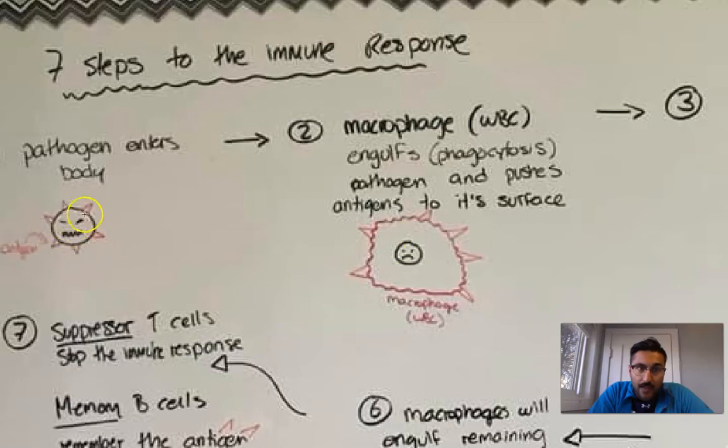The macrophage has swallowed up the pathogen, and it's taken those red triangles, those antigens, and expressed it on its own surface.